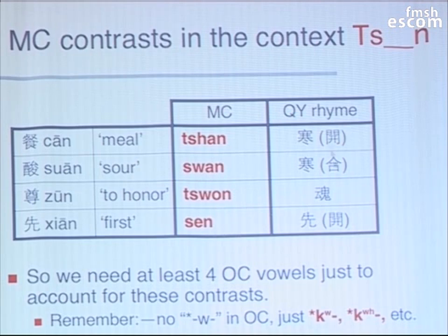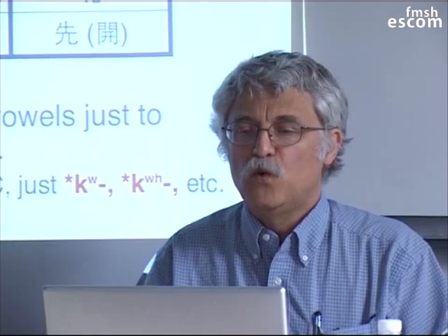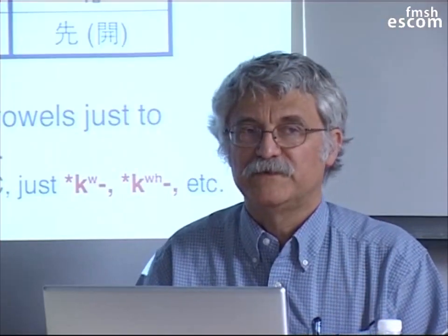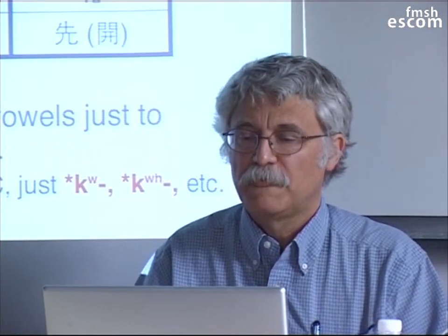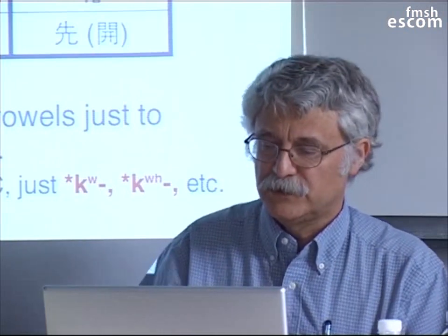There are four contrasts in Middle Chinese. I don't have absolute minimal pairs in each case, but basically there's A-N, W-A-N, W-O-N, and E-N. These are the rhymes of the Qieyun in which those occur. 'Kai' means there's no W before the vowel, and 'He' means there is a W before the vowel — we're talking about Middle Chinese, not Old Chinese. So, unless we're going to include a W that can occur freely before the vowel, we need at least four Old Chinese vowels just to account for the contrasts of Middle Chinese.